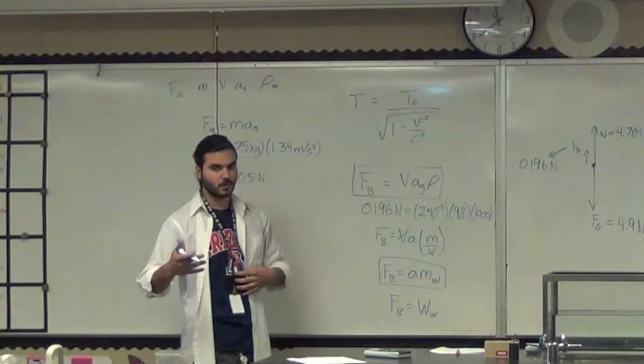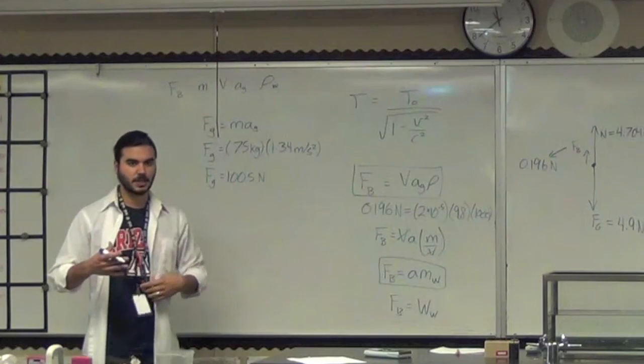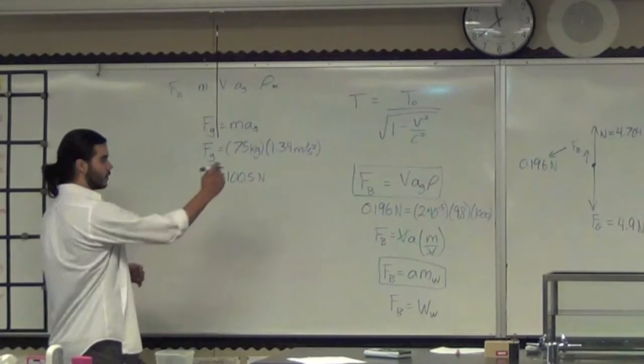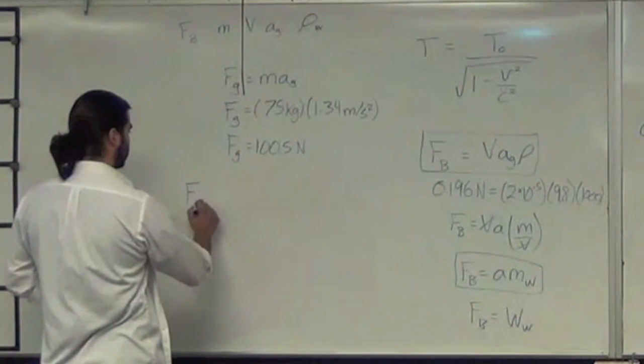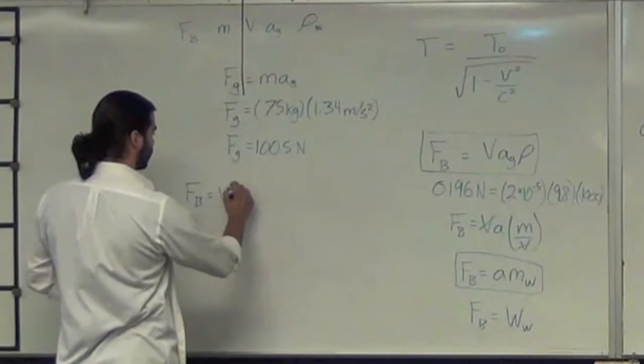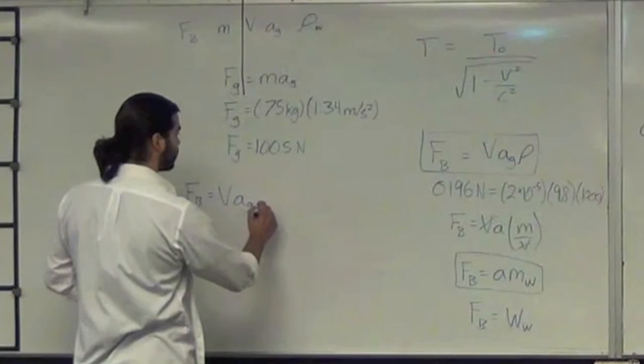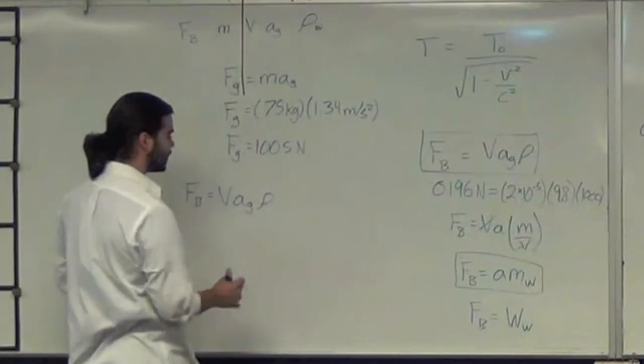So, in this case, it's not water. You need to know what the density of the atmosphere is. So, we're using that. The force of buoyancy is equal to volume times the acceleration due to gravity times the density of the atmosphere.